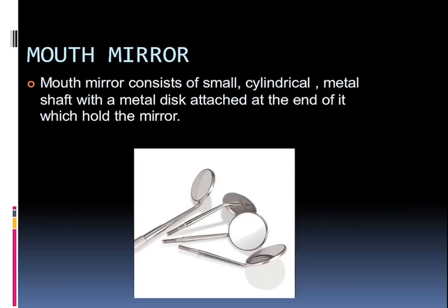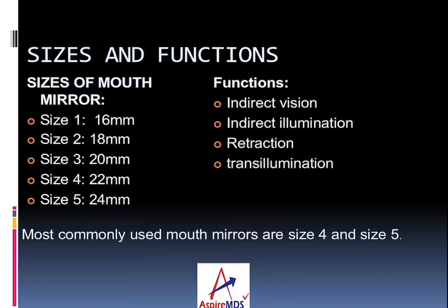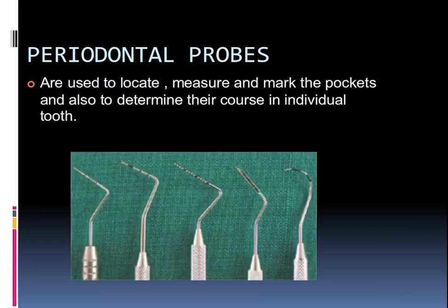There are various kinds of mouth mirrors, which consist of a small cylindrical metal shaft with a metal disc attached at the end holding the mirror. Various uses include direct vision, reflected or indirect vision, retraction of tissues, and illumination or transillumination. Various sizes of mouth mirrors are present from size 1 to 5, with diameters of 16 mm, 18 mm, 20 mm, 22 mm, and 24 mm. The most commonly used mirrors are size 4 and size 5.